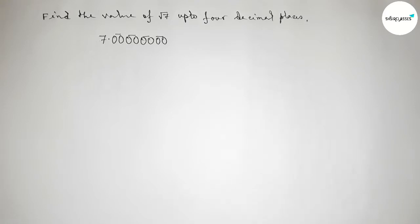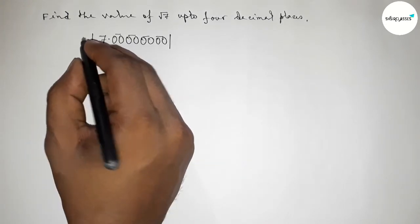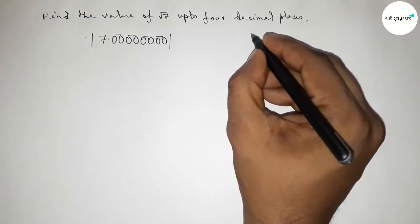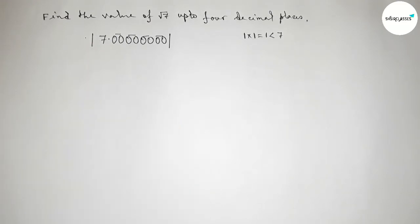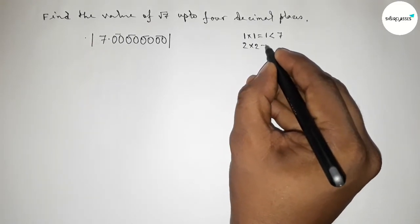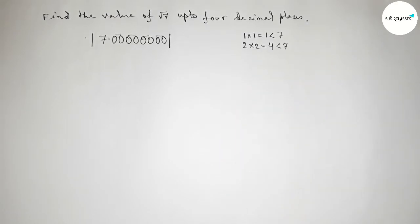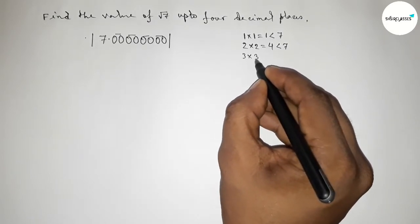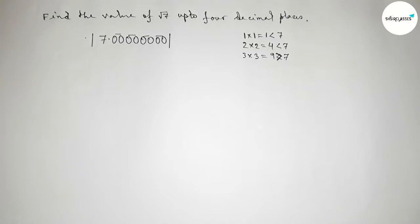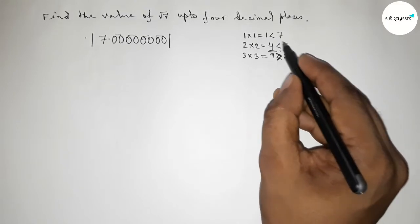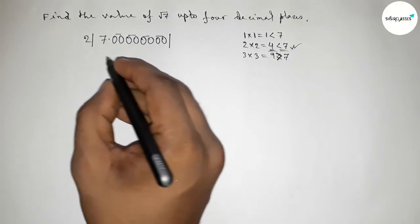Draw a division line on both sides. Now we have to choose a number and multiply it by itself such that the result is less than and almost near 7. Taking 1×1=1, which is less than 7 but not almost near. Taking 2×2=4, which is less than and almost near 7. Taking 3×3=9, which is greater than 7. So we take 2.